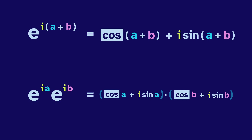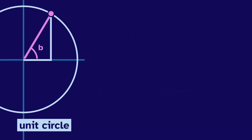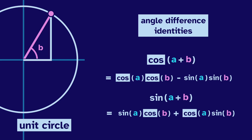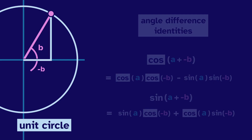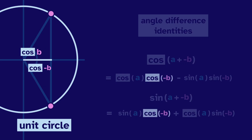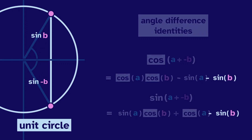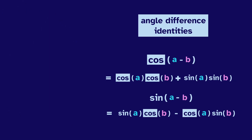The unit circle also helps us get the angle difference identities. We can just take the angle sum identities and plug in negative B. A negative angle goes in the other direction, meaning that the triangle gets flipped upside down. These triangles share a horizontal side, so their cosines are the same. But the vertical sides are flipped, so we need to make the sine negative. Then we can rearrange to get the final identities.